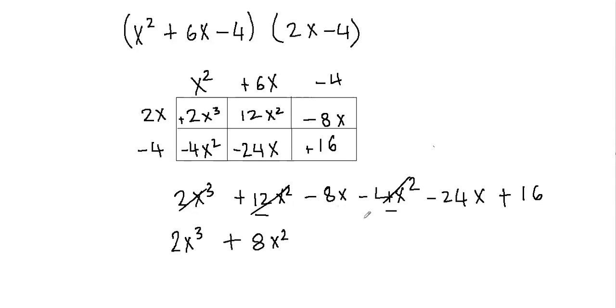Then we have negative 8x and negative 24x. We can combine these two terms. So negative 8x minus 24x will give us negative 32x. So these are gone. And then I have plus 16.